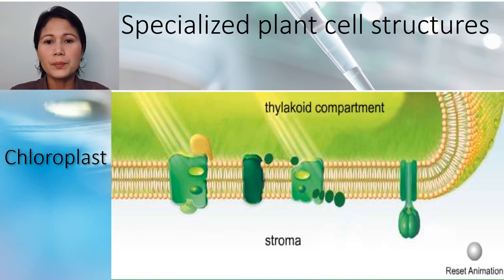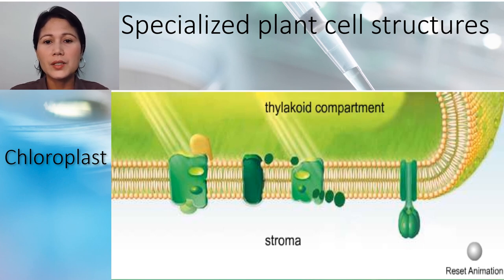The second part of photosynthesis occurs in the stroma. ATP energy is used to make sugars, starch, and other molecules from carbon dioxide and water.